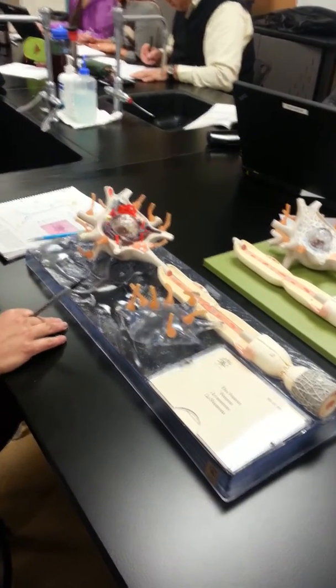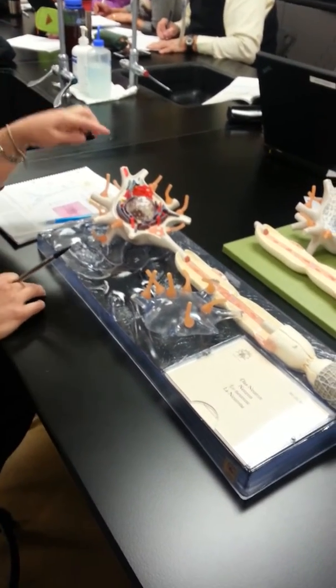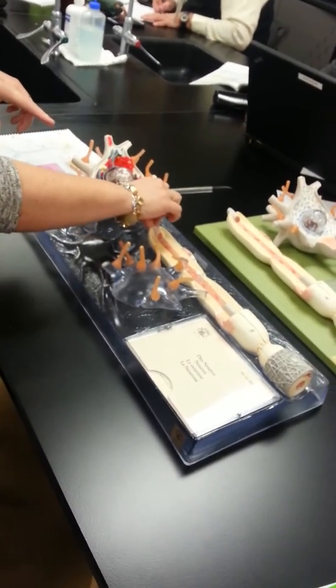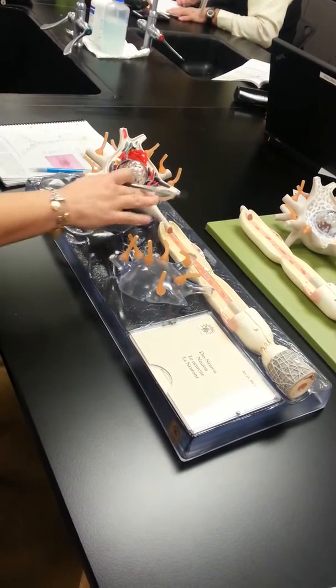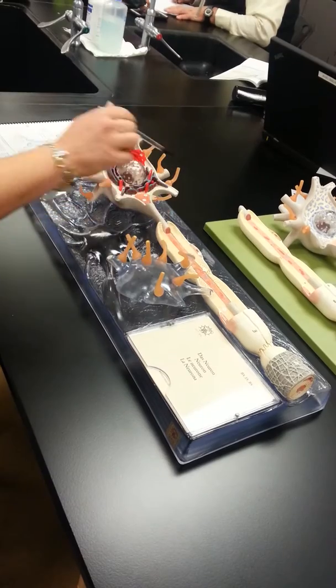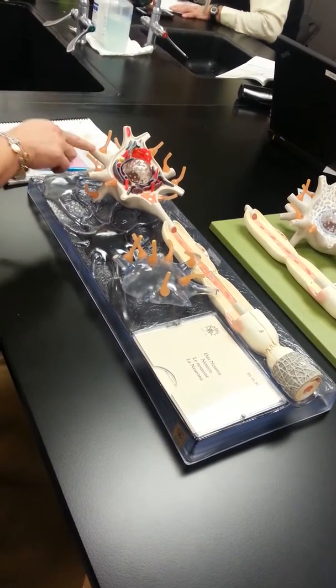We also have bipolar neurons, so they will only have one dendrite and one axon, and we have unipolar neurons that are going to have the dendrite and the axon coming off of one pole. So they will always have one axon, but you can have zero, one, or many of these other structures which are called the dendrites.